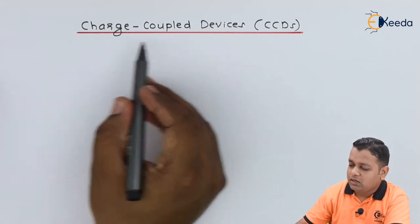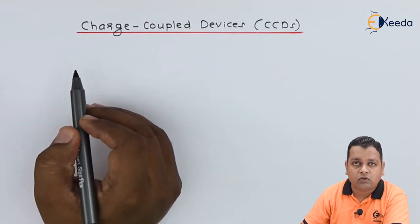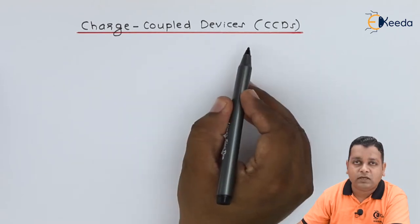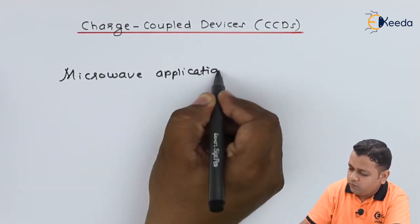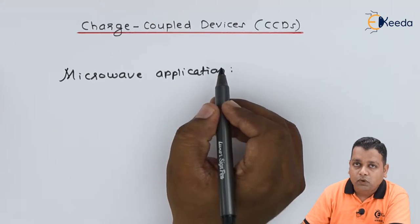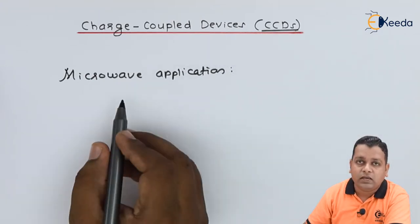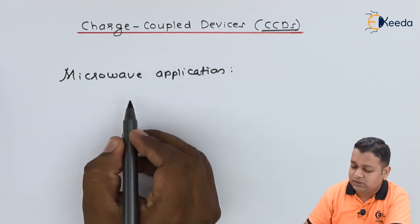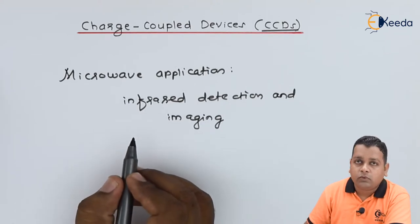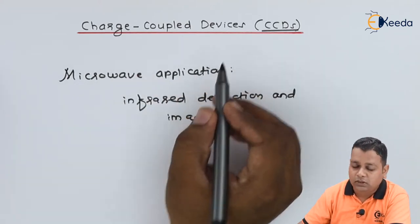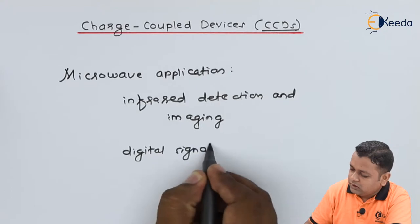The topic is titled Charge Coupled Devices. As we are dealing with devices that have microwave applications, the microwave application possible with the help of Charge Coupled Devices, abbreviated as CCDs, is Infrared Detection and Imaging. CCDs are also very popular in another wide domain of research: digital signal processing.